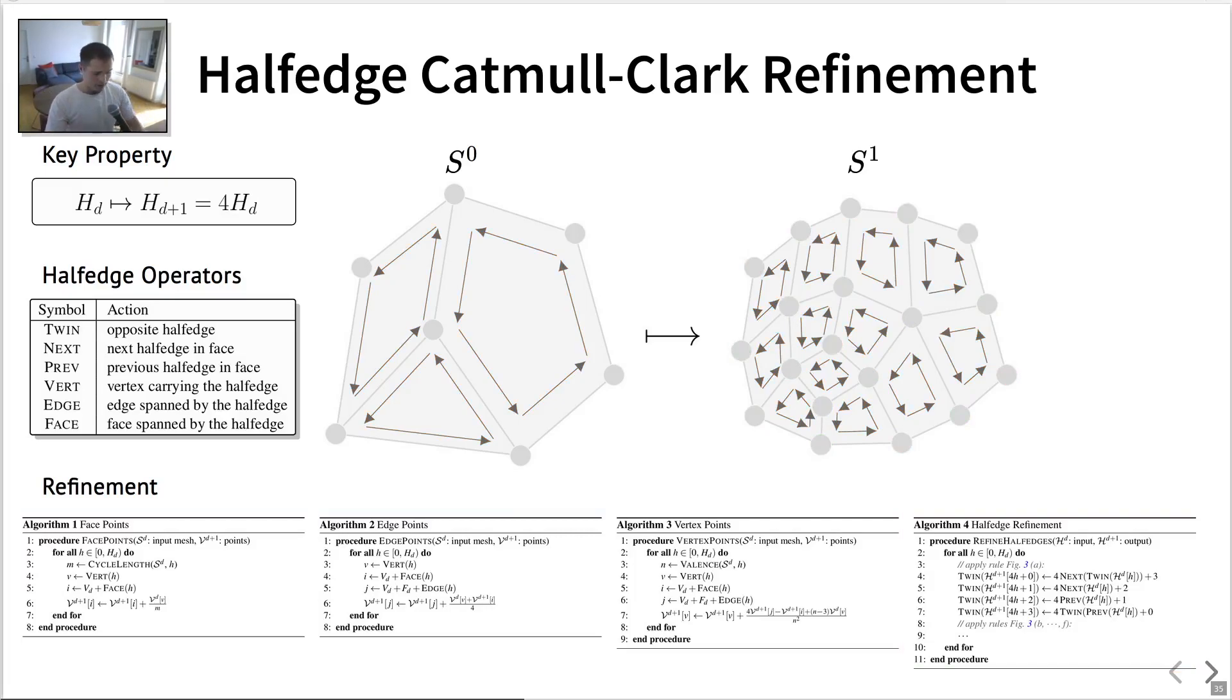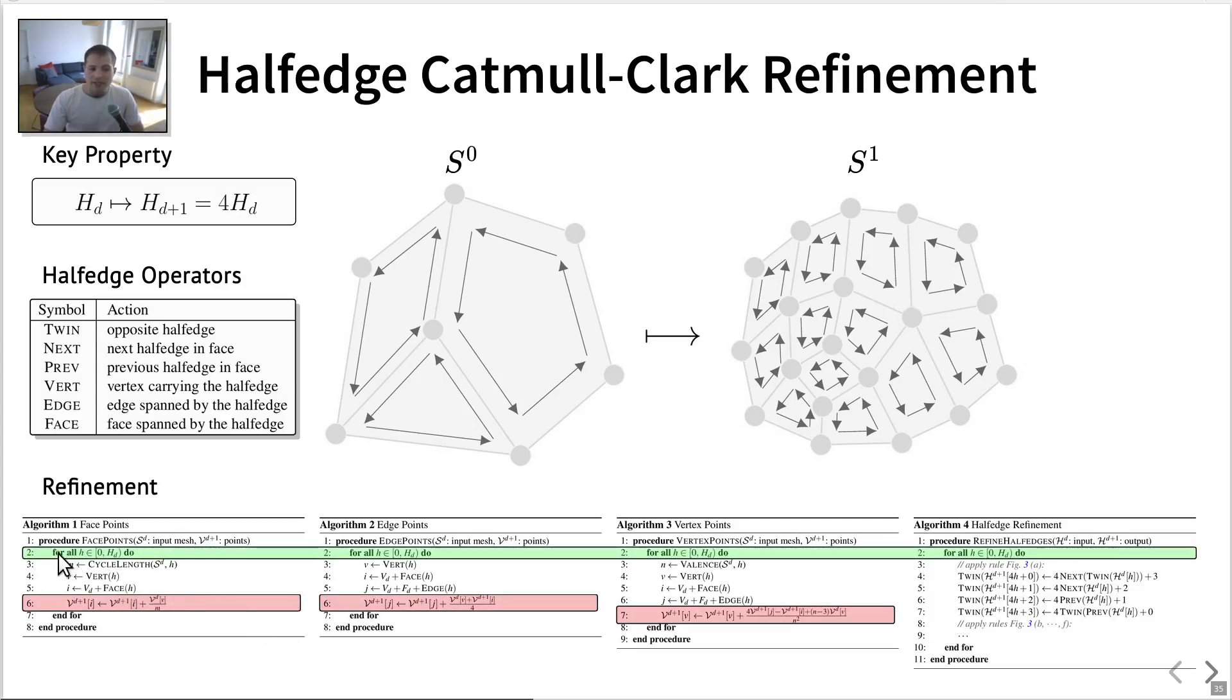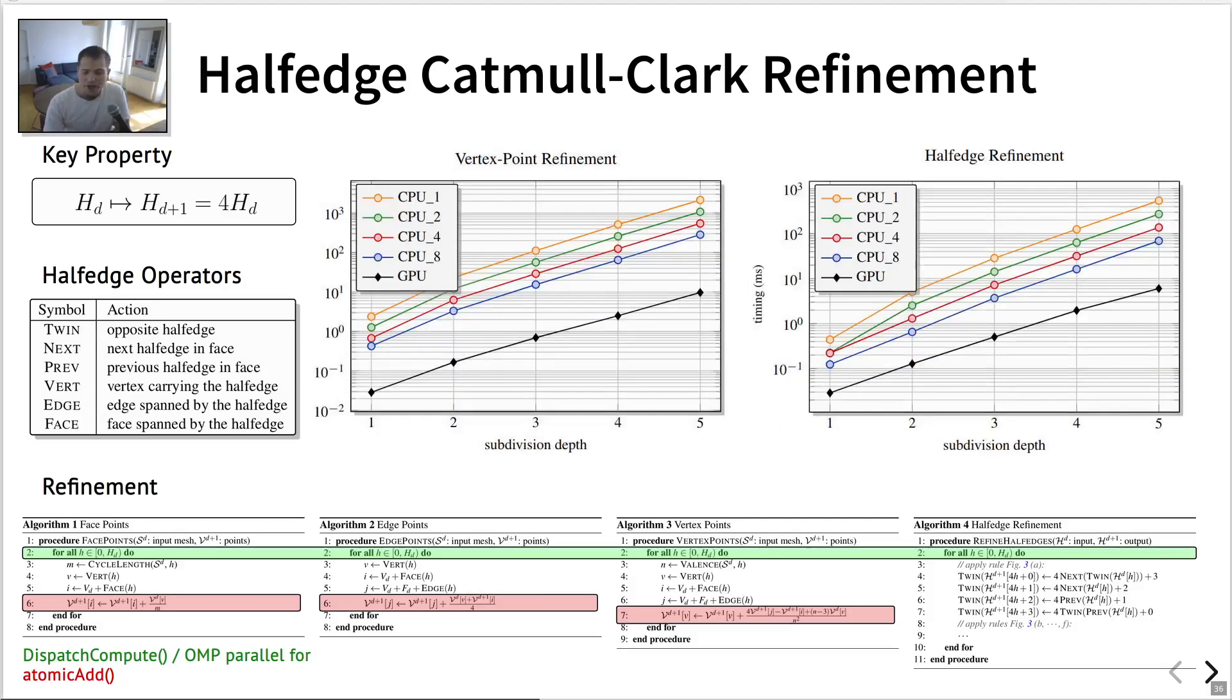So a nice property is that each step consists actually of a for loop over all of the half-edges. And for the vertex points, so the face edge and vertex points, we are simply scattering information from the half-edge buffer to the vertex buffer. So it turns out that this is really trivial to parallelize. So we discussed two implementations in our paper, we have an OpenGL based one, where we parallelize the for loop using a dispatch compute. So we wrote four compute shaders that are invoked using a dispatch compute over the half-edges of the meshes. And we also wrote a CPU implementation that uses OpenMP and Parallel for over the half-edges as well. And for these red areas, we simply need to have atomic add operations, because since all the half-edges are processed in parallel, they may access the vertex point memory concurrently. So the atomic instruction allows you to do that safely.